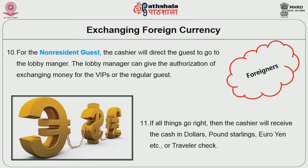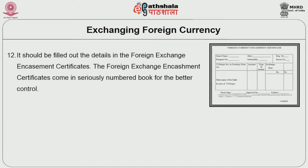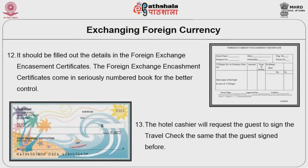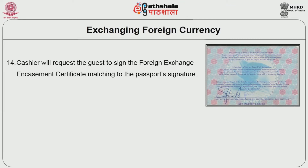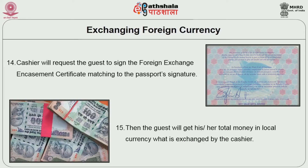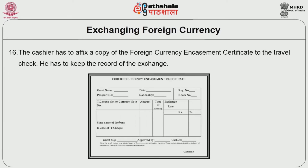If all checks pass, the cashier will receive the cash in dollars, pound sterling, euro, etc., or traveller's cheque, and fill out the details in the foreign currency encashment certificate. The encashment certificates come in a serially numbered book for better control. The cashier will request the guest to sign the traveller's cheque — the same signature as when it was issued — and also sign the foreign exchange encashment certificate matching the passport signature. The guest will then receive the total amount in local currency. The cashier must affix a copy of the encashment certificate to the traveller's cheque and keep it on record.